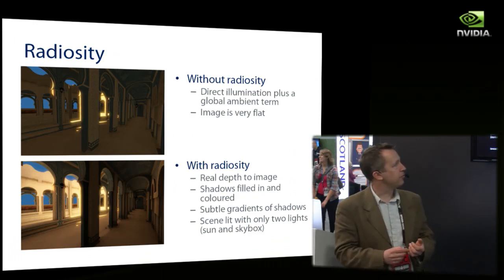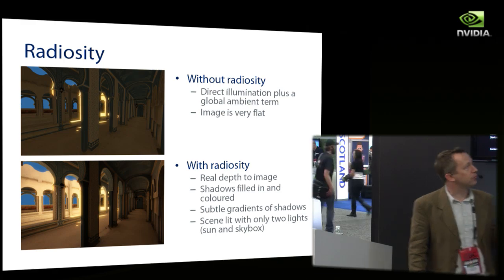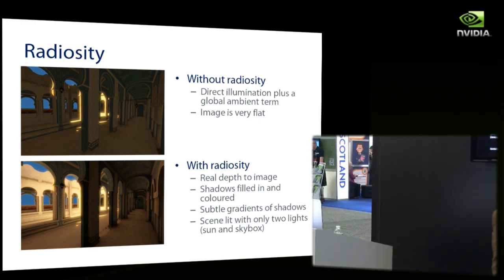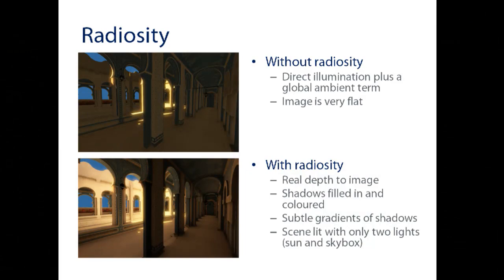A basic introduction to what Radiosity is: a scene with only direct light and a global ambient tone looks very flat and old-school. What's missing are the subtle shadows the human eye uses to get depth cues — the soft shadows underneath objects. That's all the radiosity, and everything here is what Enlighten fills in in real time.